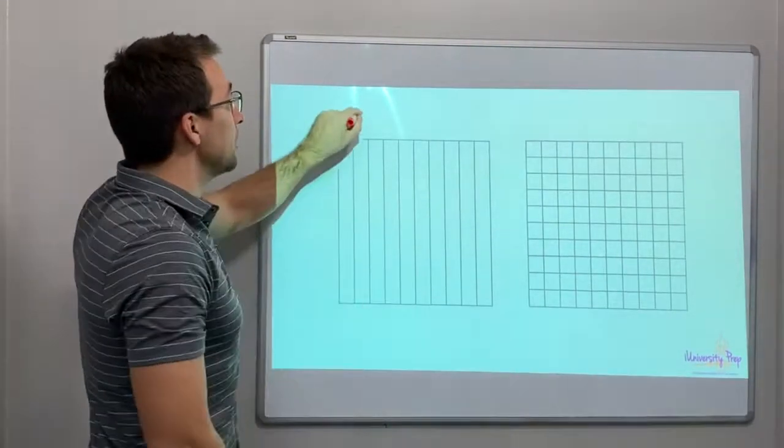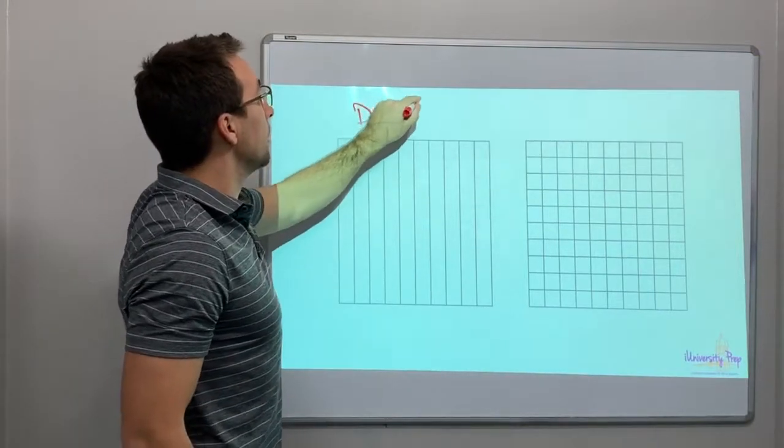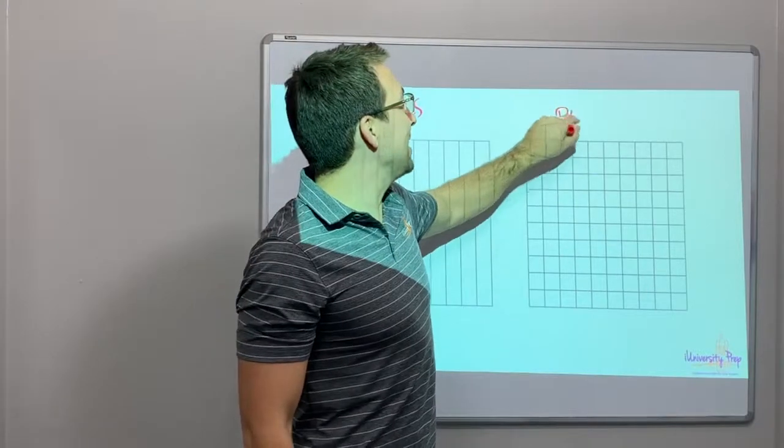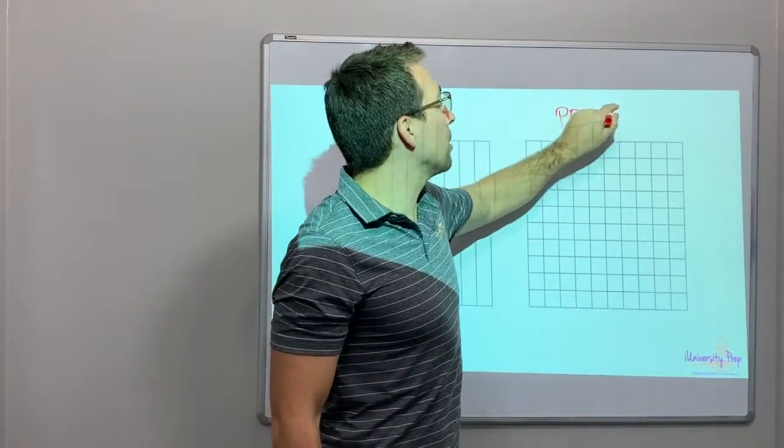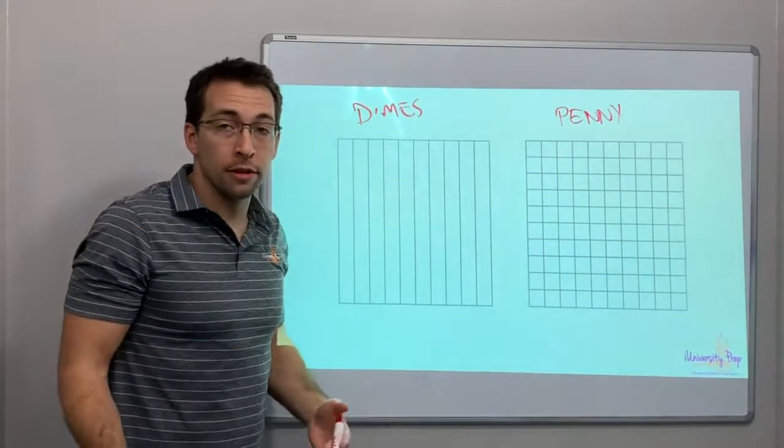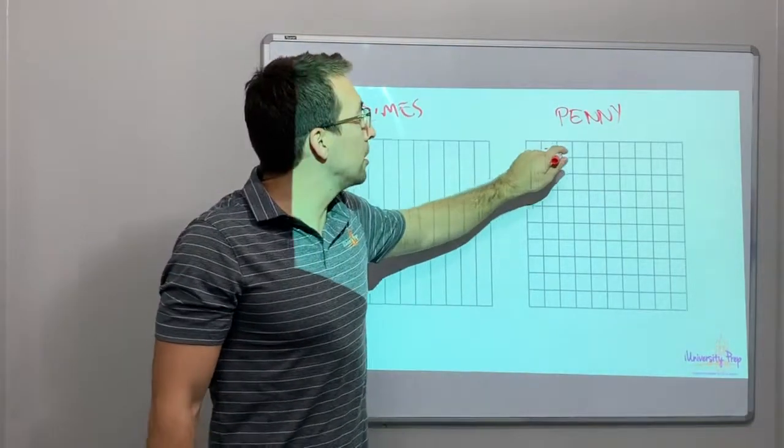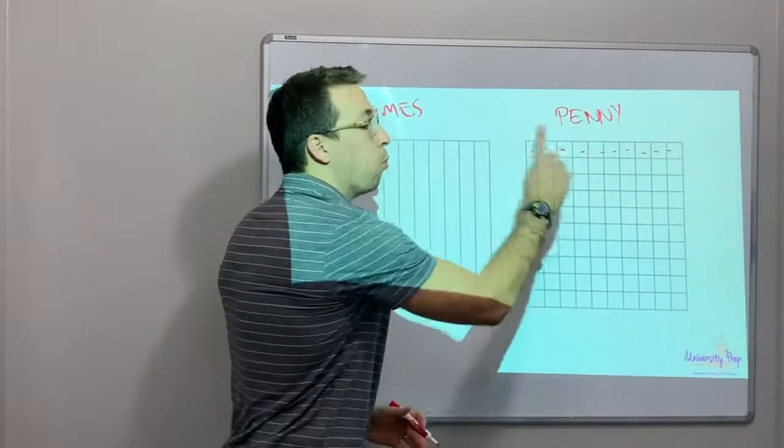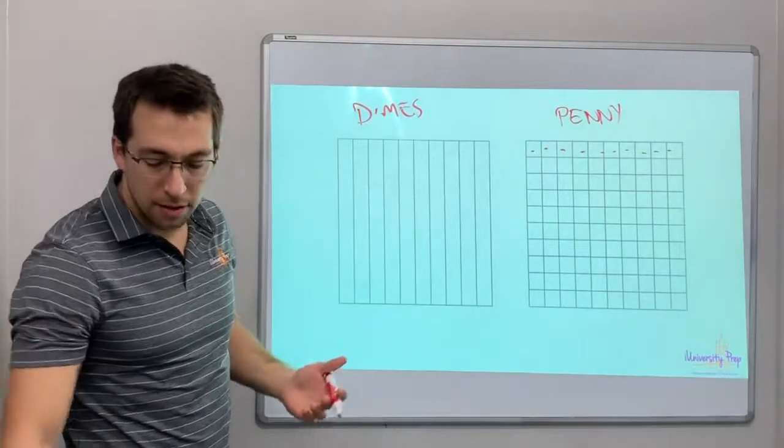I have dimes here. Dimes. And what do you have here? Pennies! Pennies! How many pennies are in a dollar? One hundred. Right? So there's one hundred little squares. There's one hundred little pennies in this one dollar. That's pretty cool.